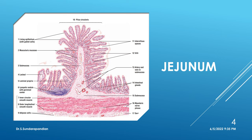Similar to duodenum, here also you are able to make out villi — these are the surface projections of mucosa in jejunum. In between the columnar cells you are able to make out more numbers of goblet cells compared to duodenum. In the lamina propria you can sometimes make out lymphatic nodules. This larger projection is the plica circularis, which is why you can see the submucosa within it.